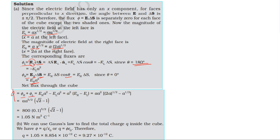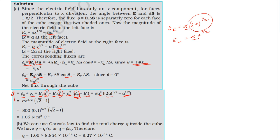Total flux equals flux through right face plus flux through left face. Flux through right face equals alpha times 2a to the power one-half times a squared. Flux through left face equals negative alpha times a to the power one-half times a squared. Taking alpha and a squared as common factors, total flux equals alpha times a squared times the quantity 2a to the power one-half minus a to the power one-half.